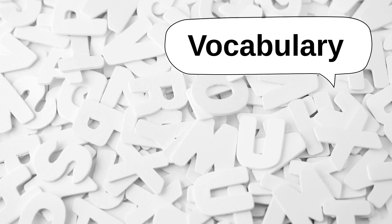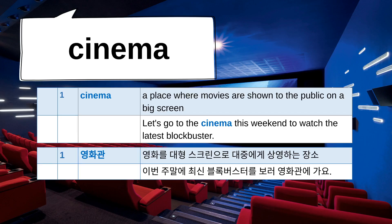First is vocabulary. Remember, 따라해보세요 꼭! Number one: cinema. A cinema is a place where movies are shown to the public on a big screen. For example, let's go to the cinema this weekend to watch the latest blockbuster.